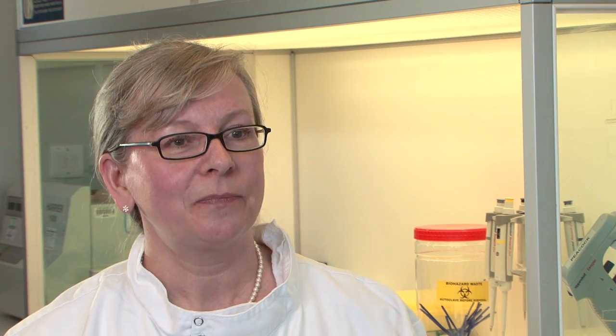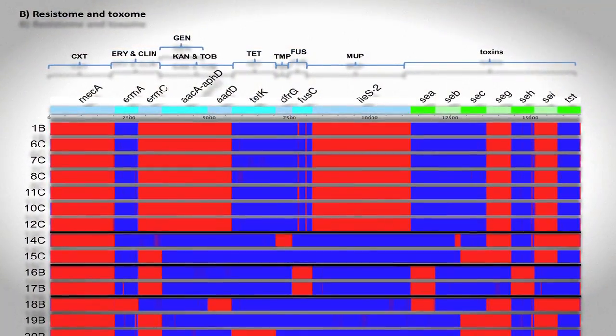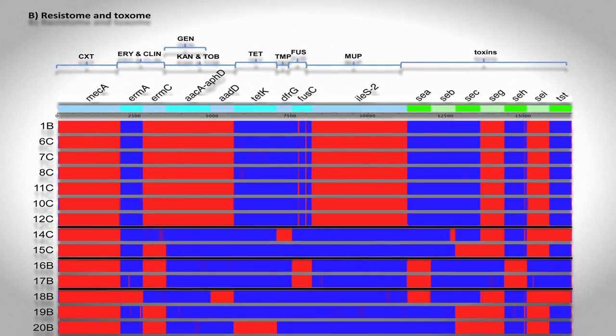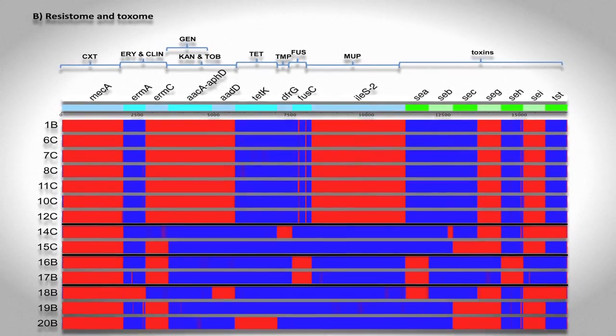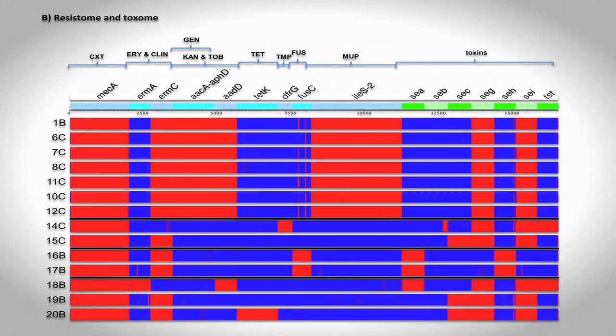Whole genome sequencing also allowed us to see all of the genes in the bacterial genome. This allows us to detect antibiotic resistance genes and genes that encode for virulence factors such as toxins, and knowing this could help us change the way we treat patients in the future.